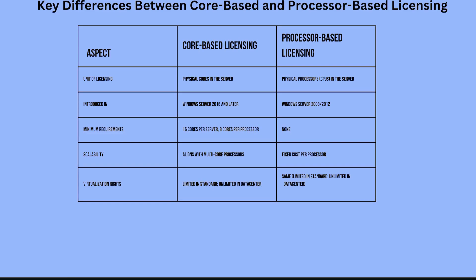Flexibility in virtualization: virtualized environments often split processing power across multiple virtual machines. Core-based licensing aligns costs with that distribution. For cloud and hybrid environments, cloud services are often billed based on core usage, so core-based licensing creates consistency across on-premise and cloud infrastructure.